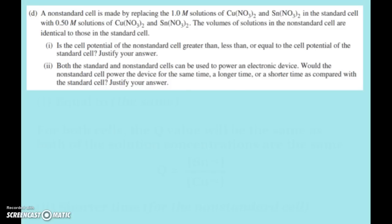Now it says a non-standard cell is made by replacing the one molar solutions with 0.5 molar solutions. The volumes in the non-standard cell are identical to those in the standard cell. Even though we're not given it directly, whenever we see that we're changing concentrations, you can reference the Nernst equation. Just because they don't give it to us in the packet, doesn't mean that you can't use it to prove something or to calculate. You can use the Nernst equation in theory to answer, which I'll show you here, but you could also actually calculate it. And so part one says, is the cell potential of the non-standard cell? And here we see greater than, less than, or equal to the cell potential in the standard cell. And please justify our answer.